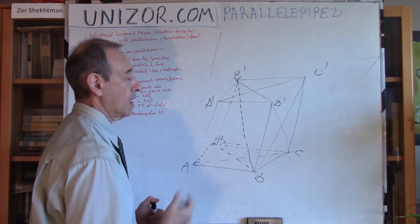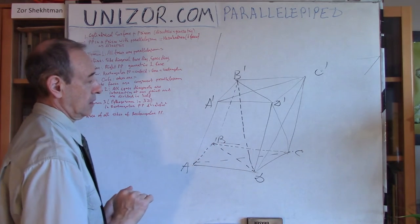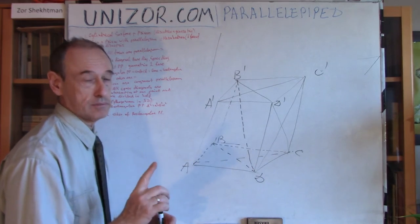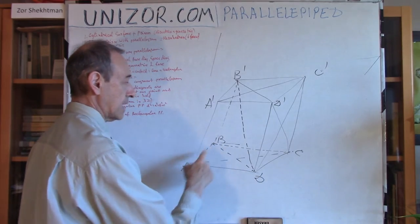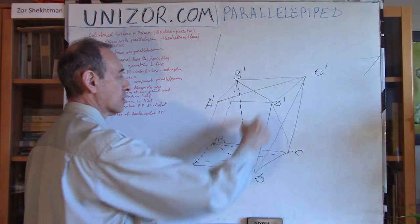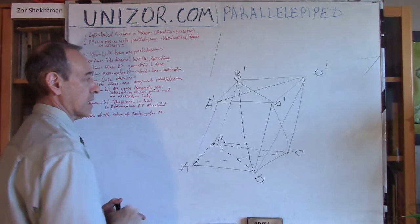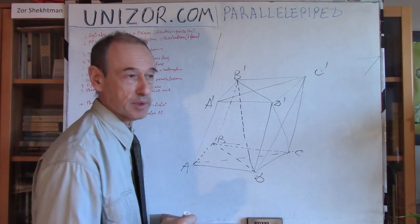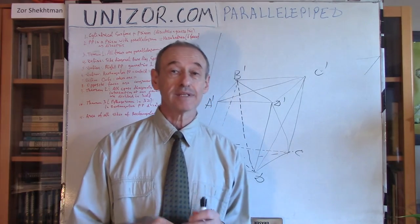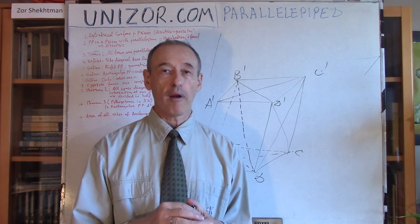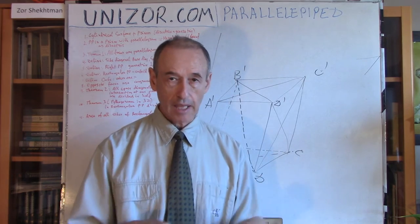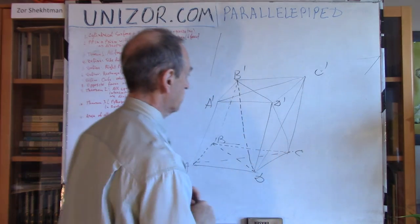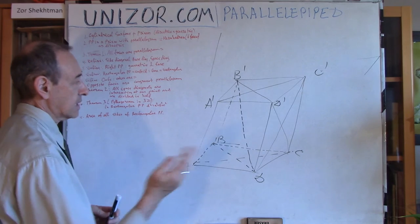Now let's add another requirement for the base. What if the base is not just a plain parallelogram, but a rectangle? So: a rectangle in the base, and perpendicularity of the side edges to the base — then this particular parallelepiped is called a rectangular parallelepiped. In most cases, we will probably be dealing with rectangular parallelepipeds, which means a rectangle in the base and edges perpendicular to the base. It is the simplest form and has many good properties.